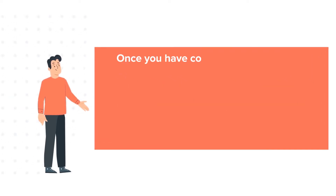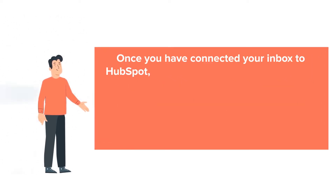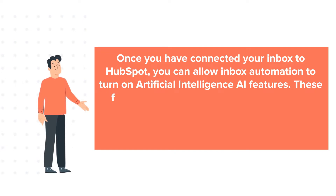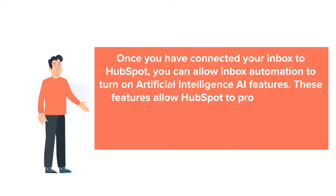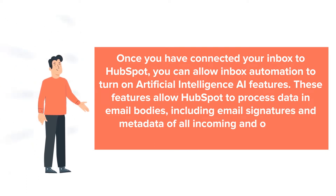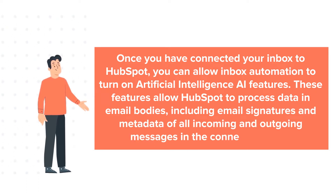Once you have connected your inbox to HubSpot, you can allow inbox automation to turn on artificial intelligence (AI) features. These features allow HubSpot to process data in email bodies, including email signatures and metadata of all incoming and outgoing messages in the connected inbox.